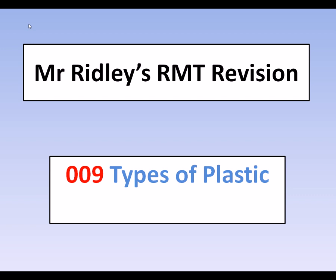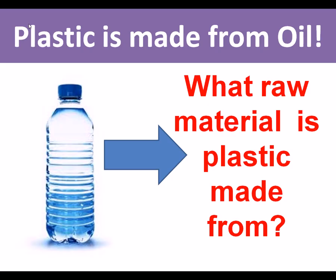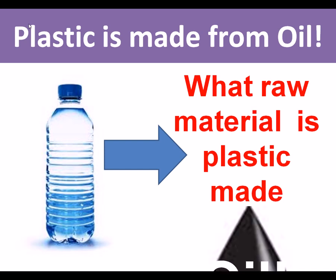The first thing we need to know about plastic is that plastic is made from oil — that's the raw material that plastic comes from, or the majority of plastics come from. What's important about that? Why is that important?